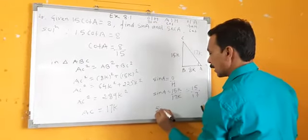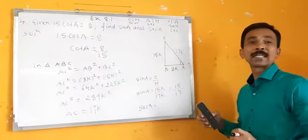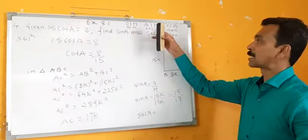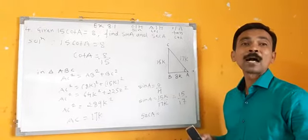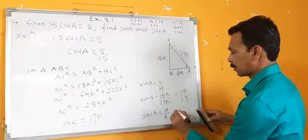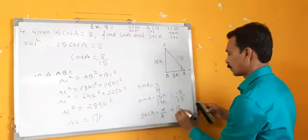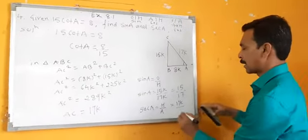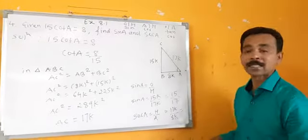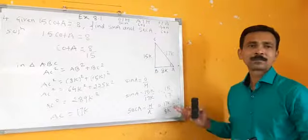Sec A. Sec means what? Cosec is reciprocal of sine; sec is reciprocal of cos. Sec means H upon A — hypotenuse upon adjacent. Sec A is equal to H upon A, which is 17K upon adjacent 8K. K and K get cancelled. Sec A equals 17 upon 8. Done.